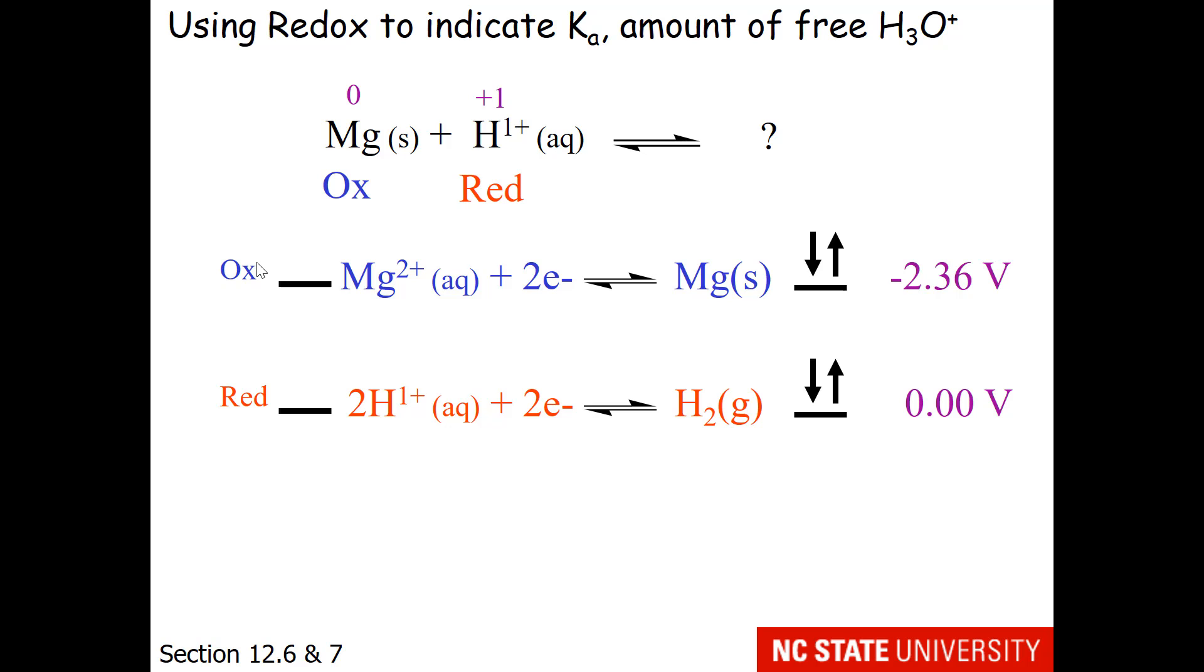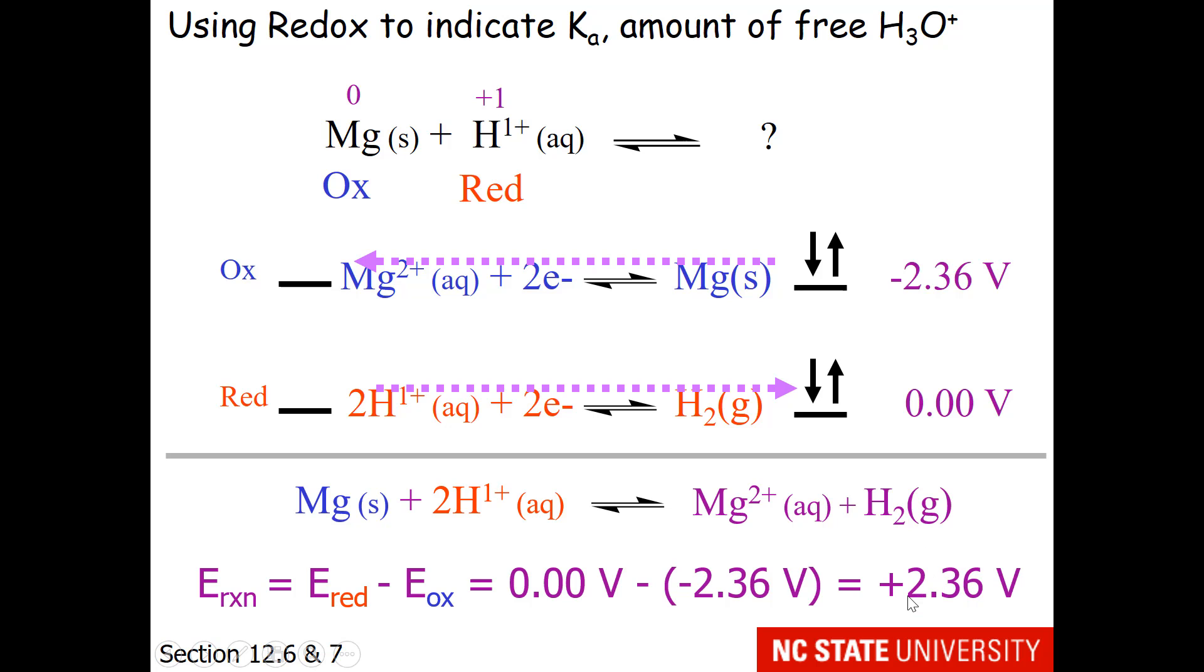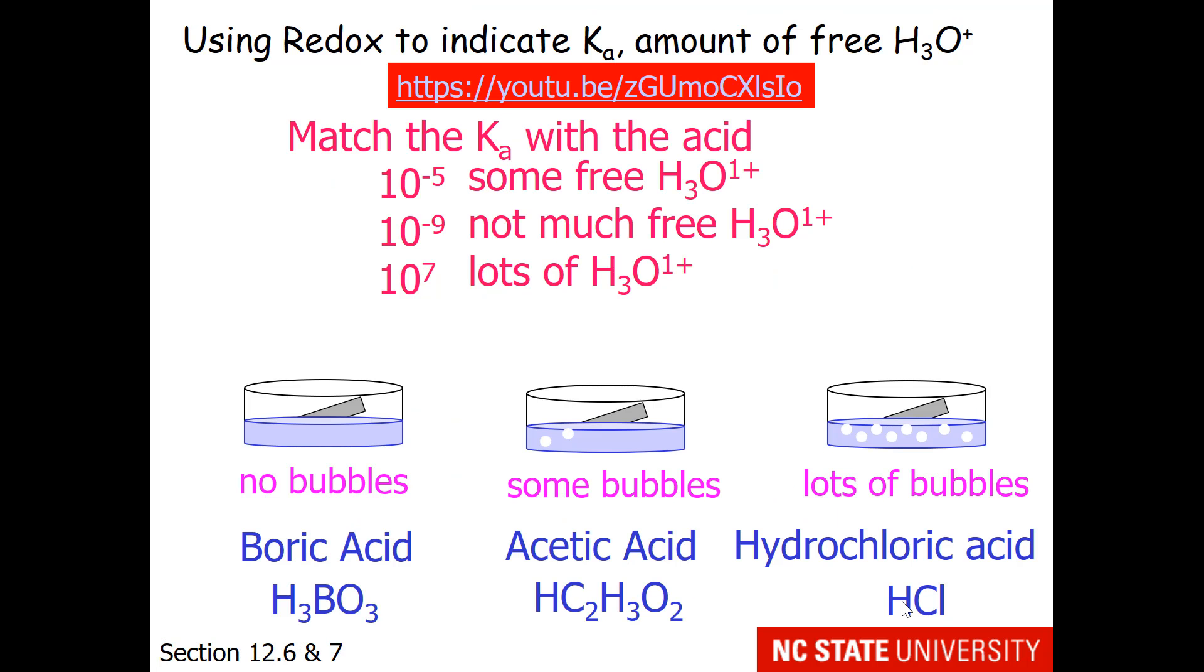So let's take a little trip back down redox lane and use redox to indicate Ka and the amount of free hydronium. If you place magnesium in an acidic solution, the following redox change will happen. Magnesium will become magnesium 2+, and our acid or proton will make hydrogen gas. This is a spontaneous net redox reaction with a positive voltage change. So here's an example. Suppose we take strips of magnesium and place them in different solutions. Our options are boric acid, acetic acid, and hydrochloric acid.